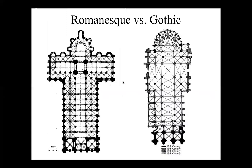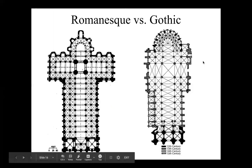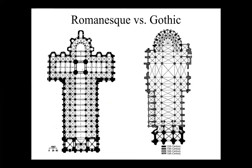Here you can see the major differences in the floor plan of a Romanesque church versus a Gothic church. There is still a cross form — we still have a central nave and a transept. But instead of being divided in a chunky way, it's much more open with large side aisles, which just continue through the transept, creating a more open space rather than very modular and chunky.